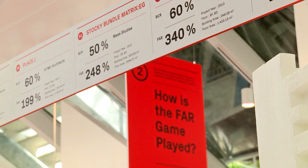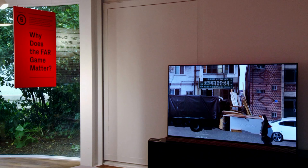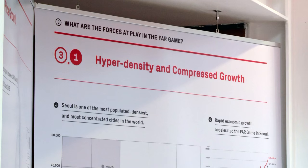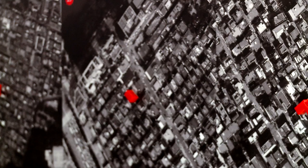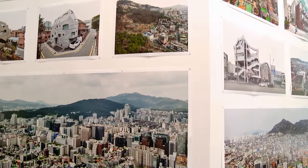The title of our exhibition is The Far Game: Constraint, Sparking Creativity. FAR is basically floor area ratio, and the FAR game means the endeavor to maximize floor areas as much as you can given certain circumstances. The FAR game is at the front line of architecture in Korea because almost all architects in Korea have to play this game to get commissions.